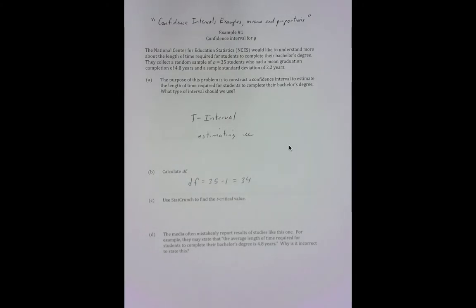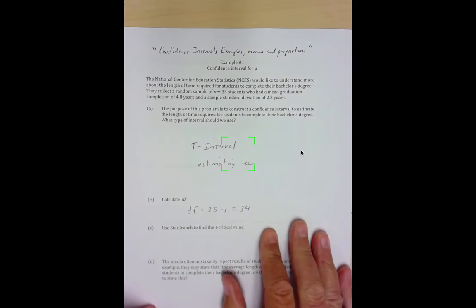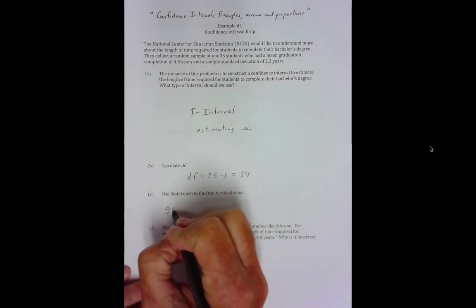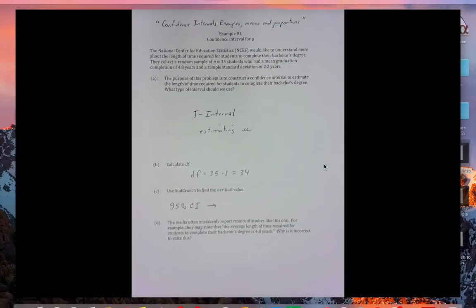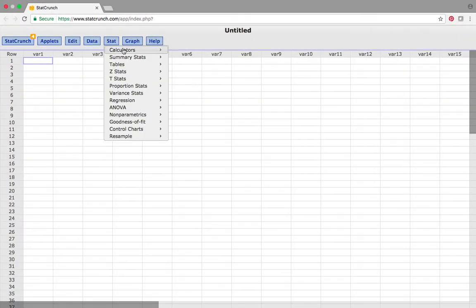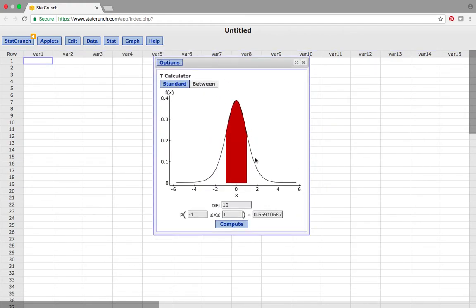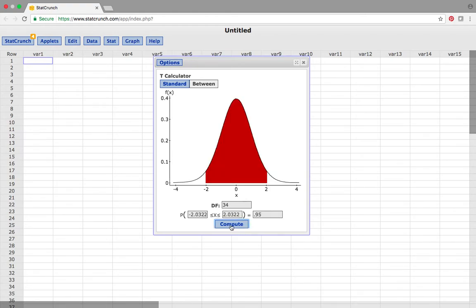Now the next problem: use StatCrunch to find the T critical value. What we're going to assume here is that we're doing a 95% confidence interval. So degrees of freedom are 34. Go to Stat, go to Calculator, go to T. Choose Between. So our degrees of freedom are 34. And we want 0.95 area because it's a 95% confidence interval. So our T critical is 2.0322.